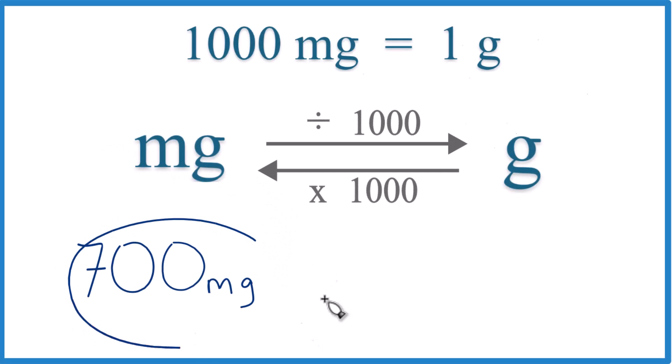Okay, we have 700 milligrams we want to convert that to grams. So we need to know 1000 milligrams equals 1 gram, or 1 gram equals a thousand milligrams. This is our conversion factor, so we need that when we go from milligrams to grams or grams to milligrams.